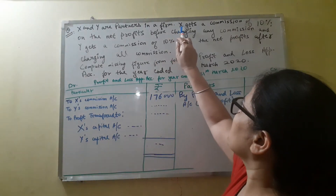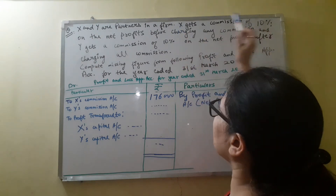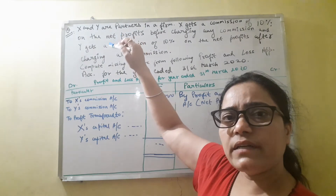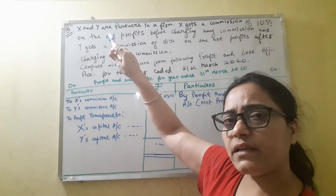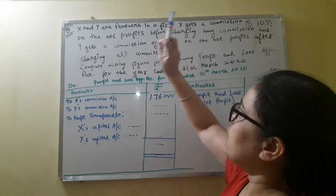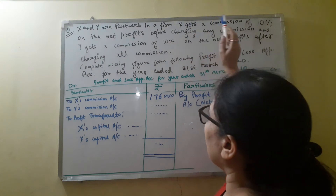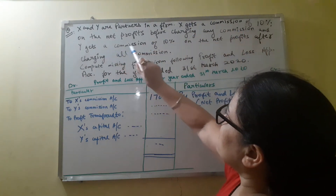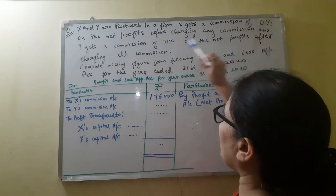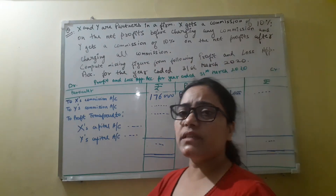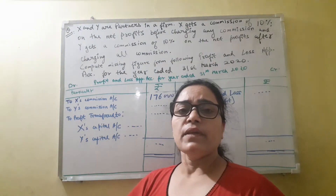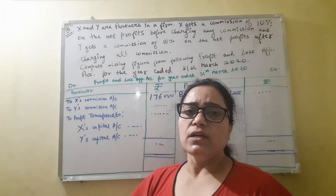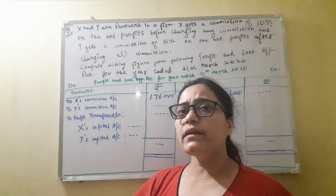Two cases are given here. First, partner X is getting a commission of 10% of the net profit, so it is very easy to calculate — 10% of the net profit will be the commission of X. Next, Y gets a commission of 10% of the net profit after charging all the commissions, so Y's commission will be calculated after charging all commissions. The calculation is slightly different in that case.